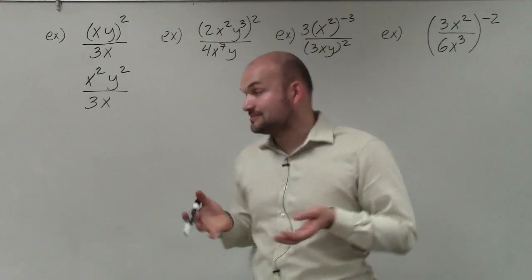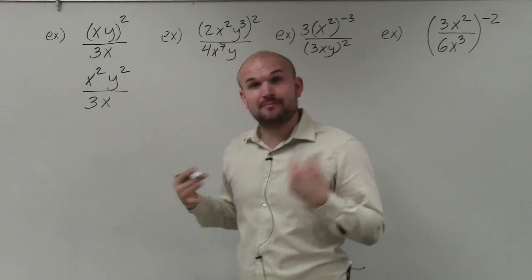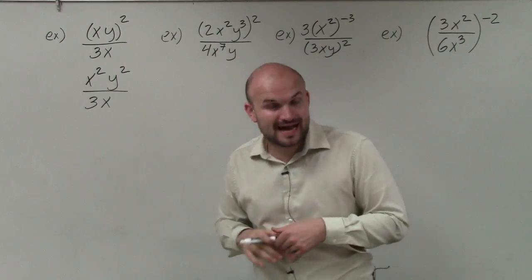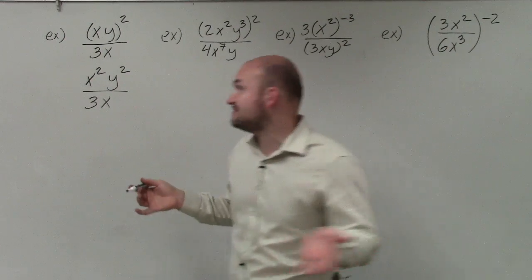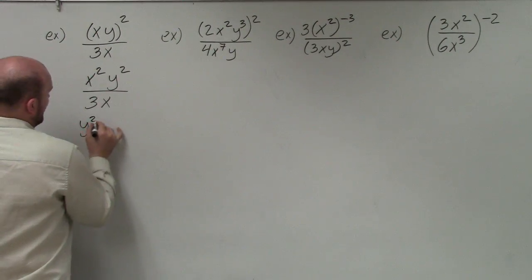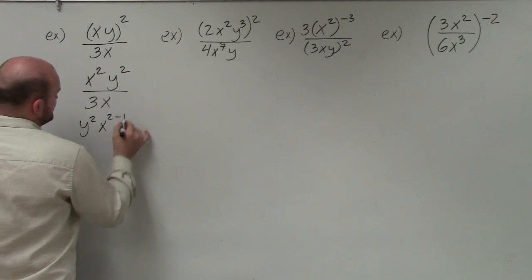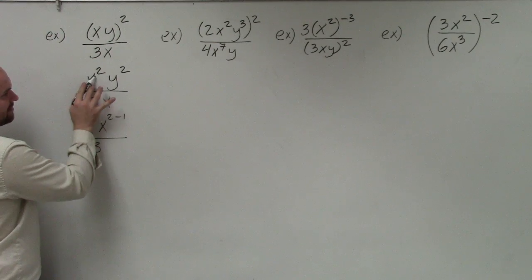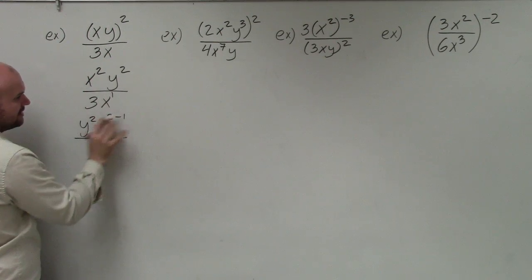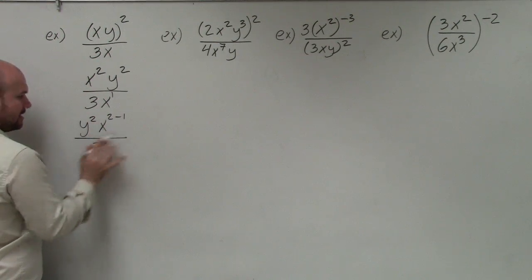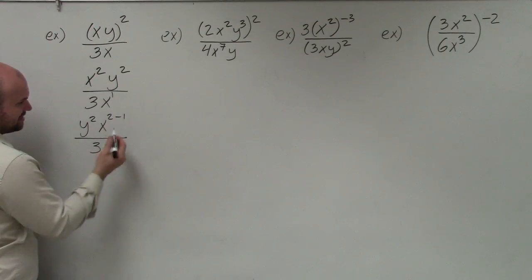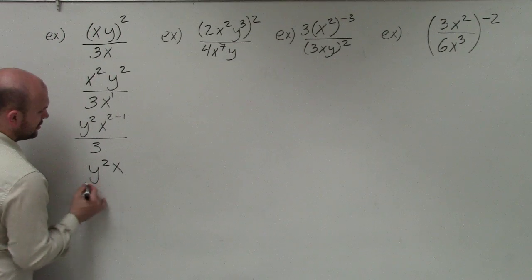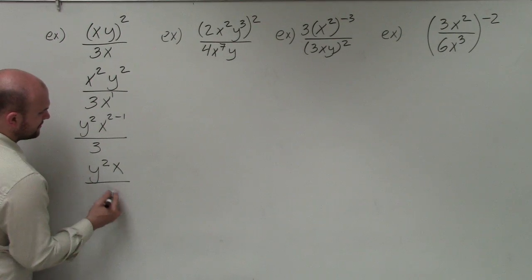Now you can see that the only thing I can simplify using my rules of exponents is the division of x squared over x. So I'm going to use the quotient property to get y squared times x to the 2 minus 1 divided by 3. And 2 minus 1 is just x to the first, which is just x. So my final answer would be y squared times x divided by 3.